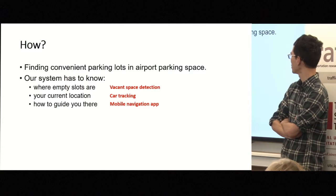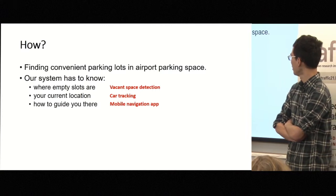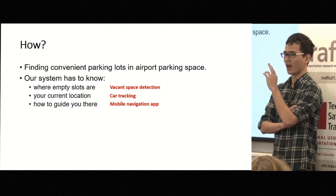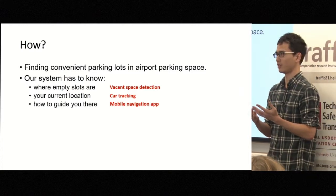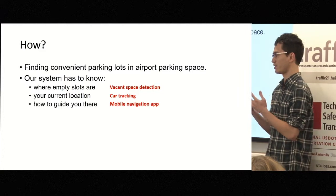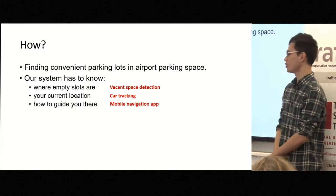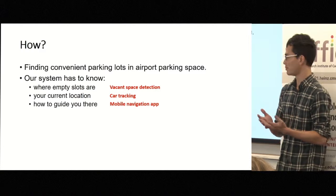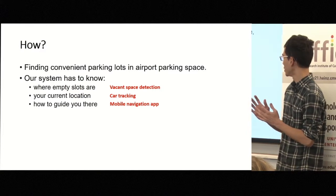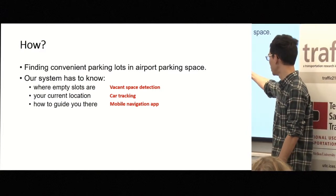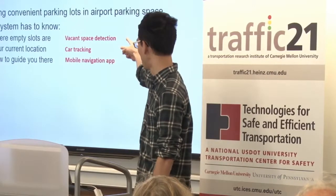We built three functional modules. The first is vacant space detection and the second is car tracking. These first two are programs built on the cloud, so we have powerful computers to handle computation and data storage for statistics. The third is a mobile navigation app installed on the user's mobile device. On the client side, communication between the app and the two cloud modules is very important.